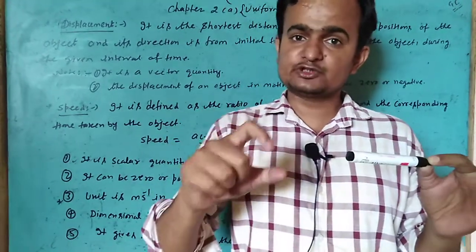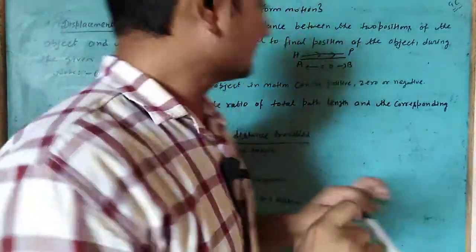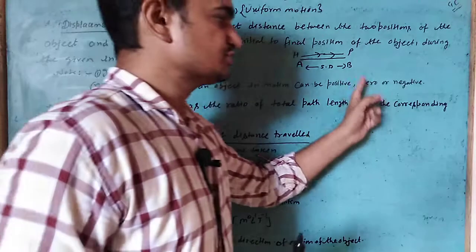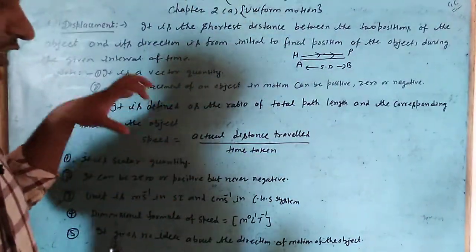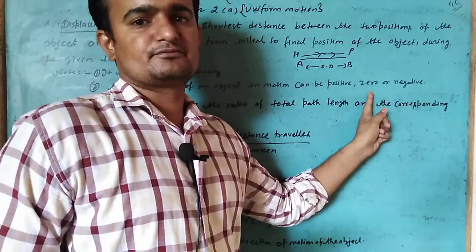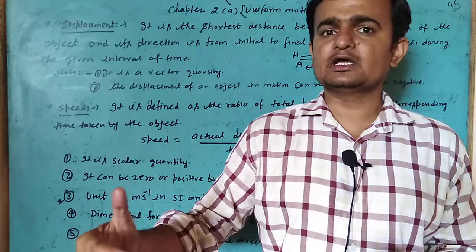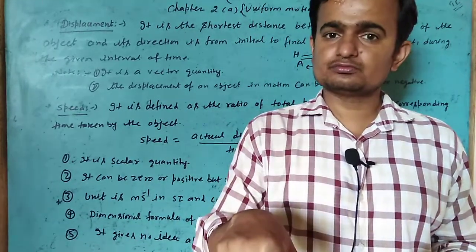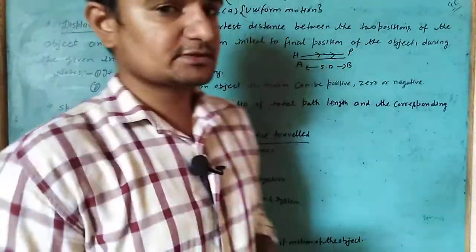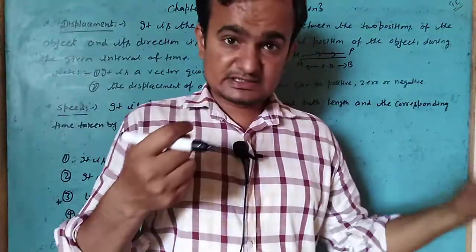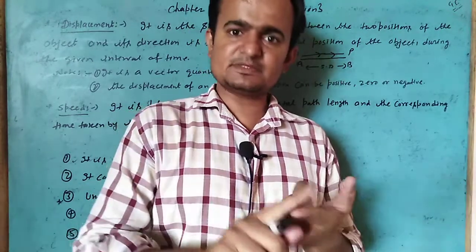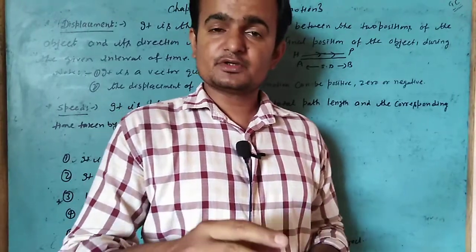Displacement is a vector quantity because it has both magnitude and direction. The displacement of an object in motion can be positive, zero, or negative. In contrast, distance can never be negative and can never be zero when the object is in motion.